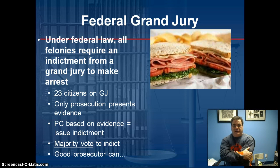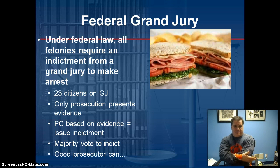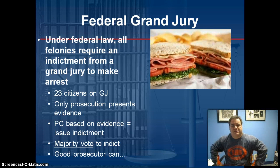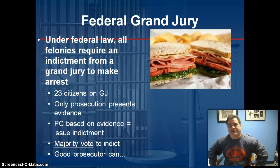A grand jury is a special thing. There are 23 citizens on a grand jury. It's not a two-sided affair — only the prosecution, meaning only the state, presents evidence at a grand jury, and probable cause is based on that evidence. If it's established and the grand jury believes it is, they issue an indictment to arrest that person. A majority vote will indict someone, and there's an expression in law that a good prosecutor can indict a ham sandwich — that's how easy it is to get an indictment.